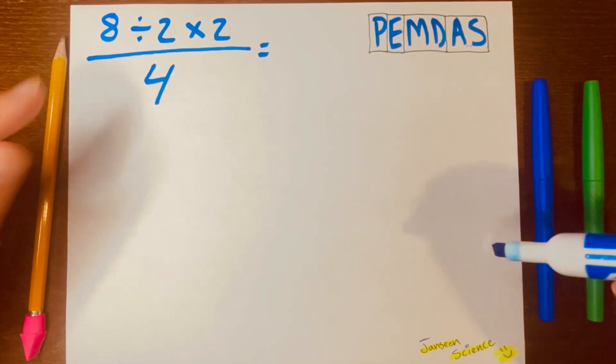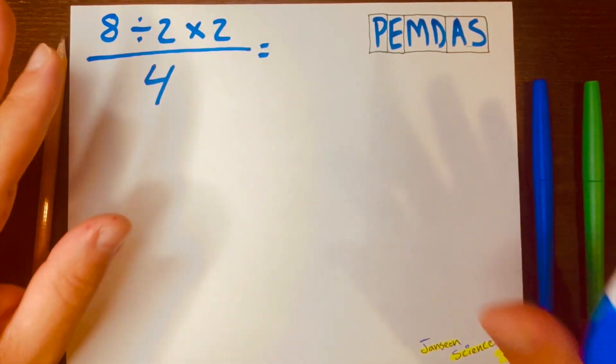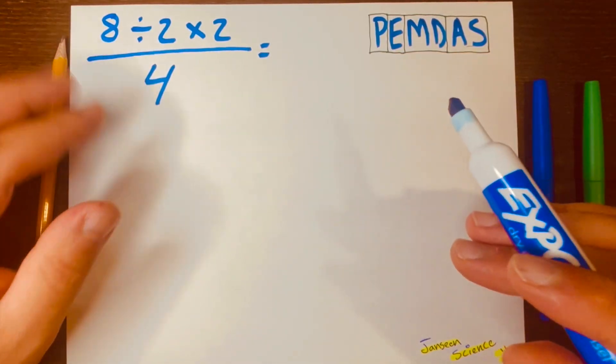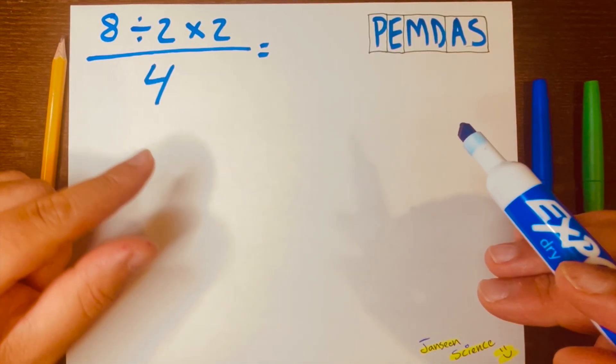Hi everyone, today we're going to solve this viral math problem that is talked about a lot on the internet. 8 divided by 2 times 2 divided by 4.